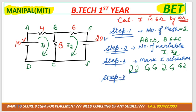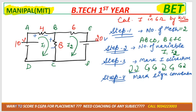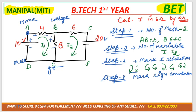Step number four: we have to mark the sign convention. Current always flows from higher potential to lower potential — moving from A to B, positive to negative, then B to C, positive to negative. The battery sign: the bigger one is positive, the smaller one is negative. Just imagine this is your home and this is your college. After college you move to the gym and then to the mall, then back home — home to college positive to negative, college to gym positive to negative. Battery sign remains the same irrespective of the direction of current.